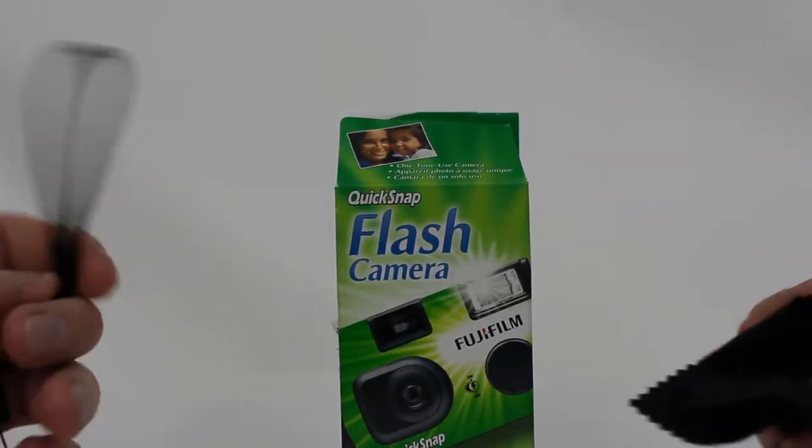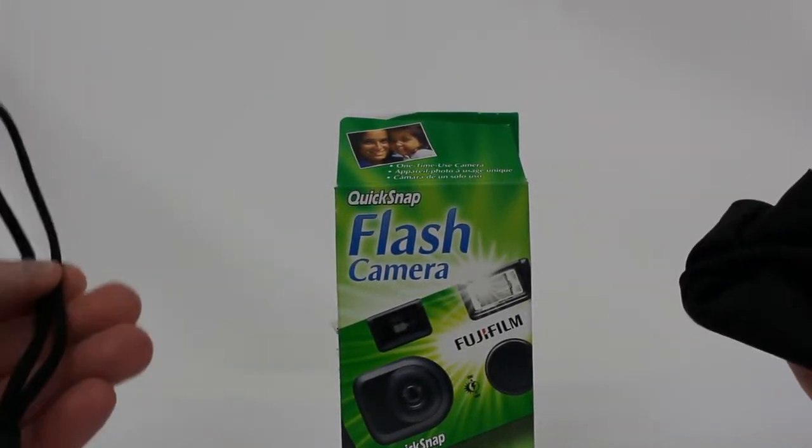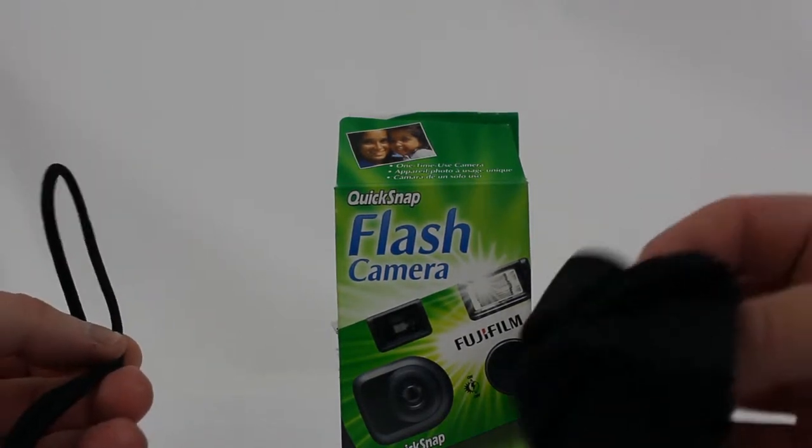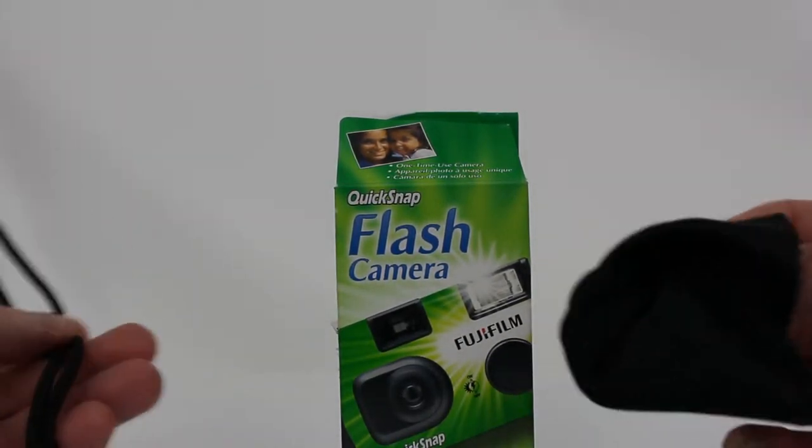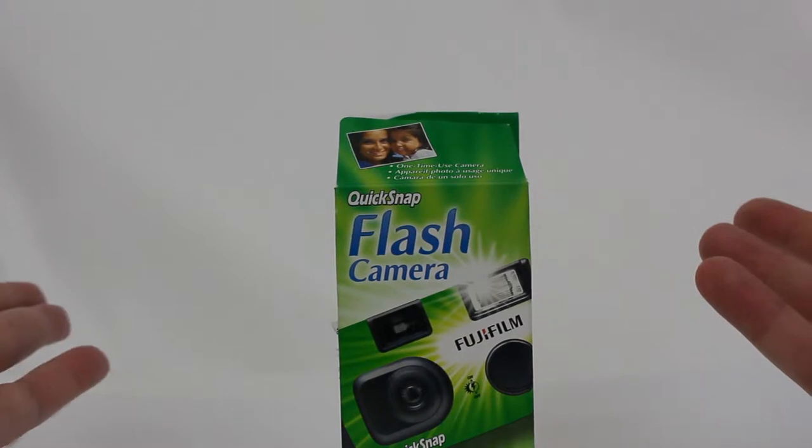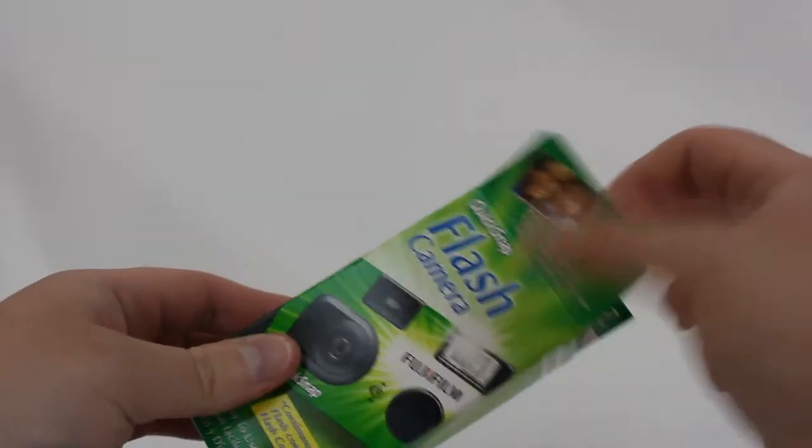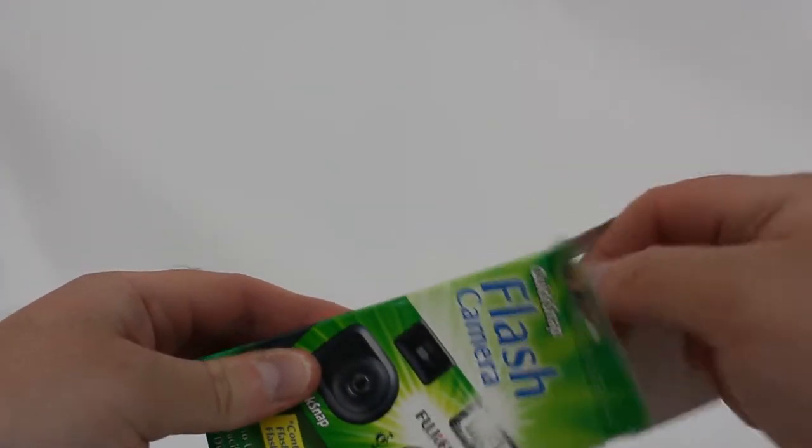Okay, Fujifilm quick snap. First things first, this flash camera came with a wrist strap and a little chamois cloth to wipe the lens. It's the instant camera. Already opened it, let's pull it on out.